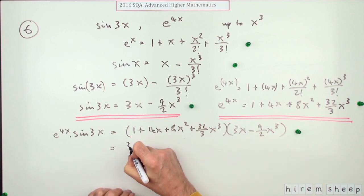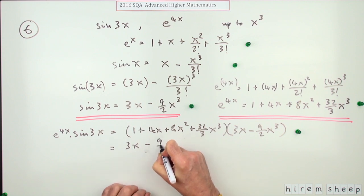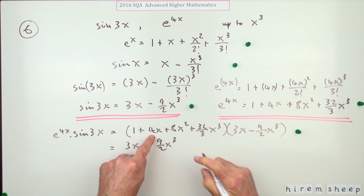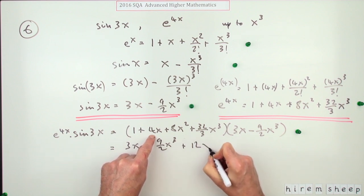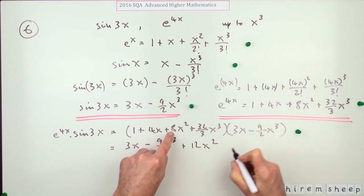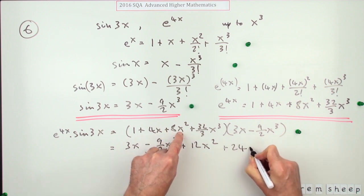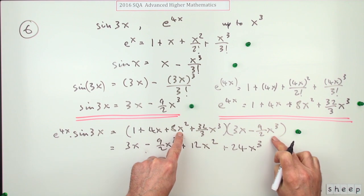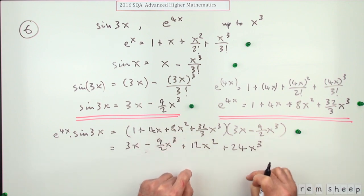Times 3X minus 9 upon 2 X cubed. Now, just putting those two expressions together in the product gets you the fifth mark. So now just multiply it out, only multiplying out the ones that will be useful to you. Anything bigger than X to the 3 doesn't get put down. So 1 can multiply them both. That'll give me 3X minus 9 upon 2X cubed. 4X can multiply that one, so plus 12X squared. No point multiplying that. 8X squared can multiply that, so I've got a 24X cubed.